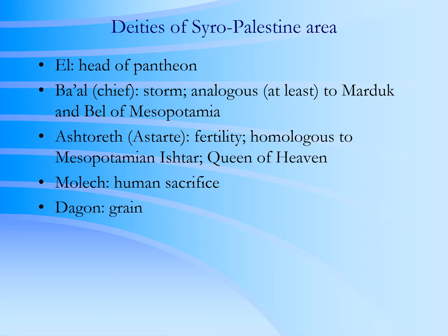Here are some of the deities associated with this western part of the Near East. Especially significant is Baal, well known from Biblical texts. And Astarte or Ashtaroth, the goddess of fertility, the queen of heaven — I believe the name is linguistically connected to Ishtar, and the goddess is very similar to Ishtar over in Mesopotamia.